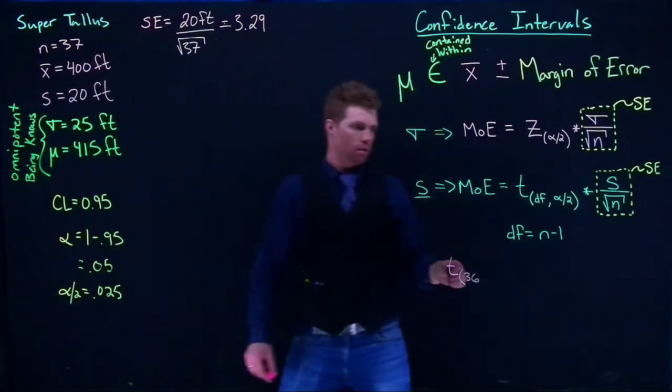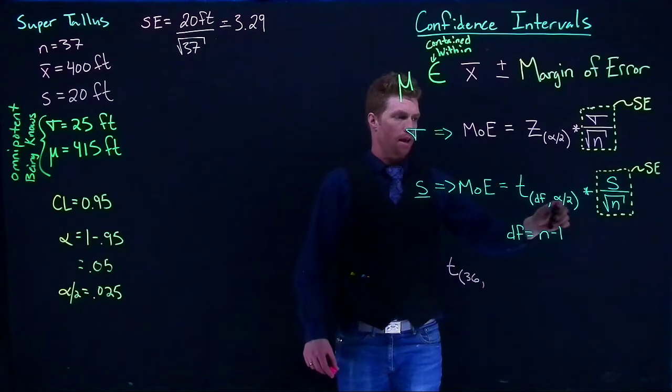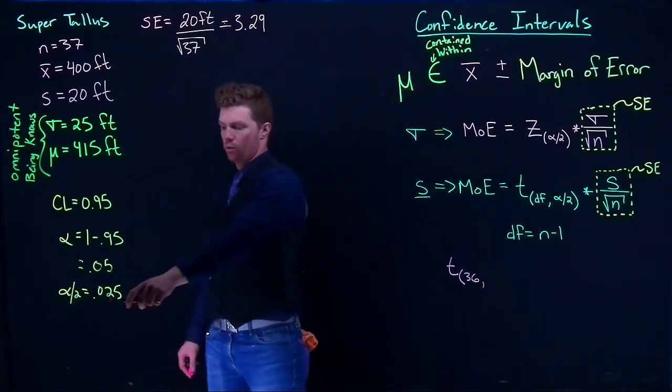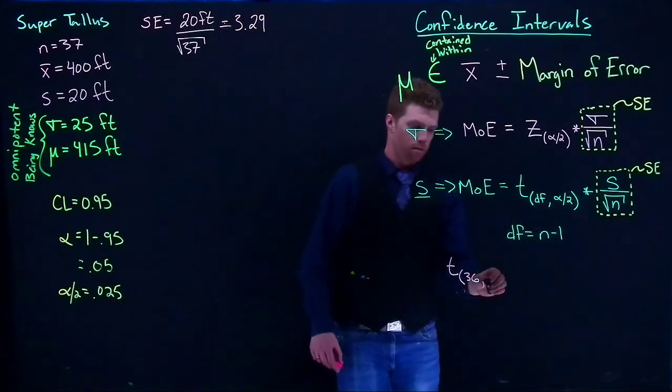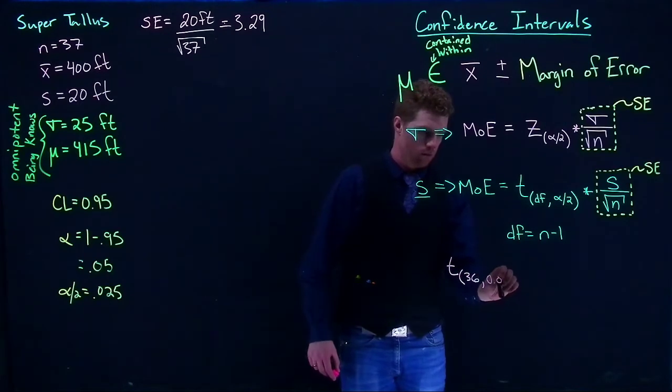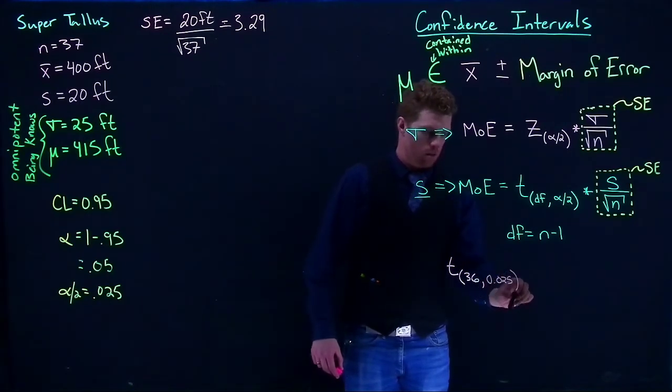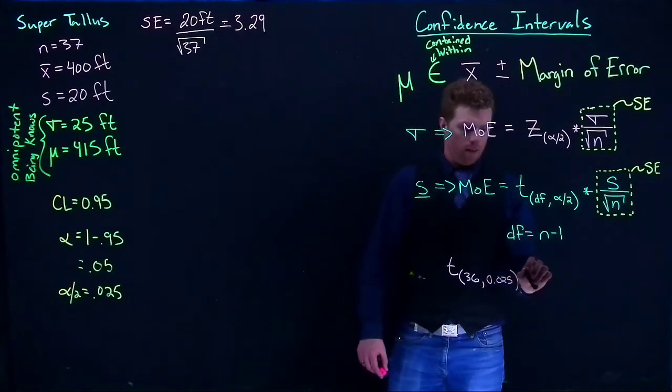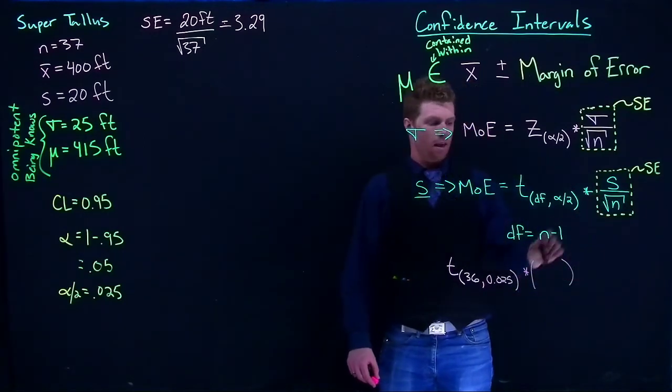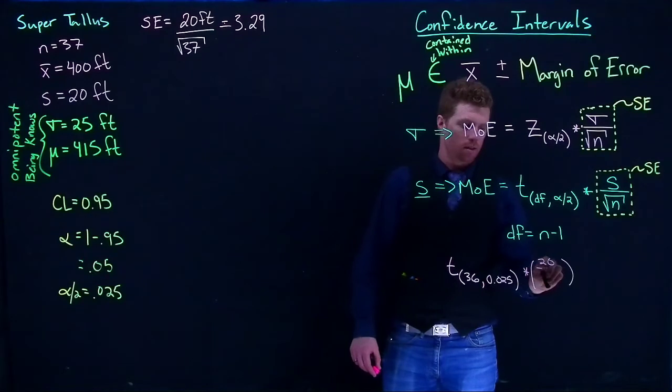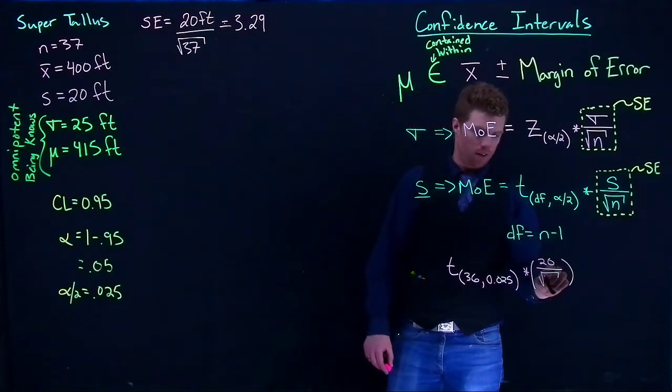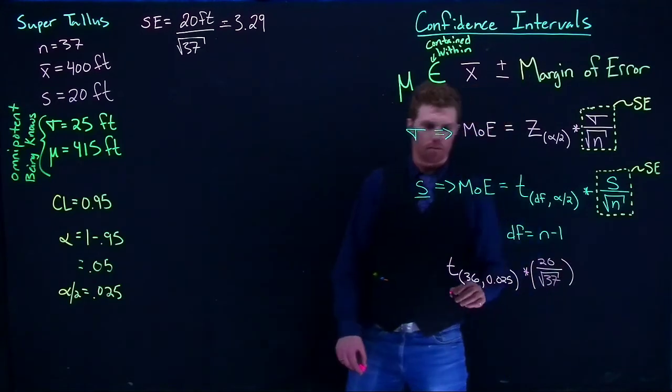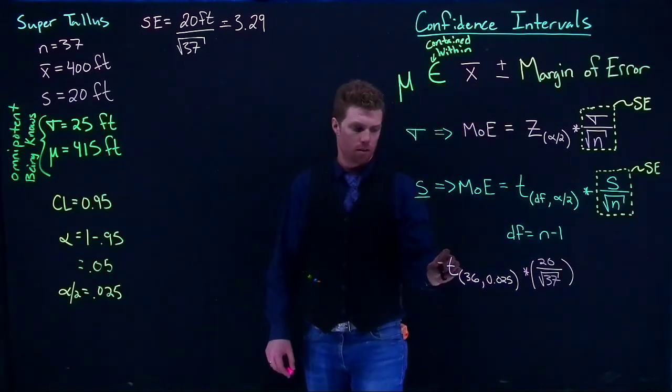So we need to know T at 36 degrees of freedom, or 37 minus 1, comma, alpha divided by 2. We did that already. That's at 0.025. And we're going to multiply this by our standard error of S, which was that 20 divided by the square root of 37. That's how we calculate our new margin of error.